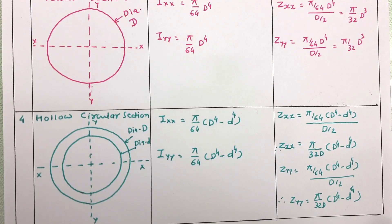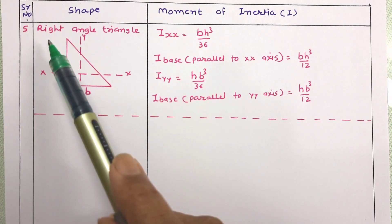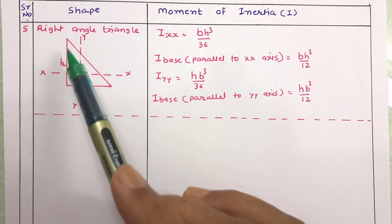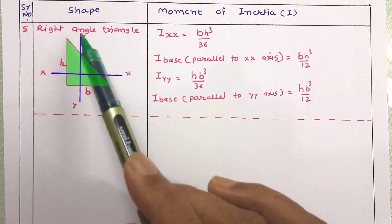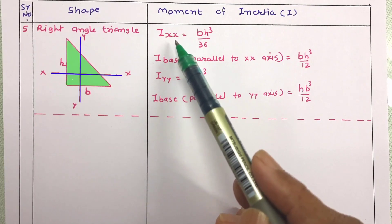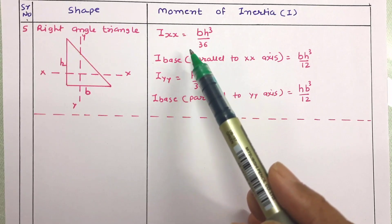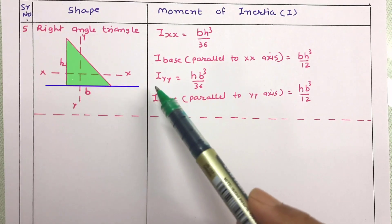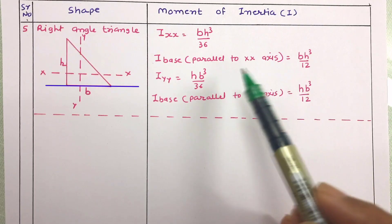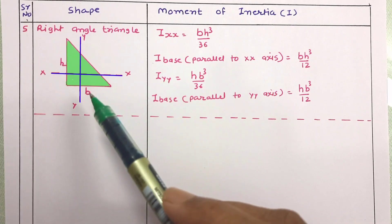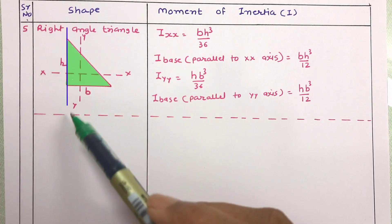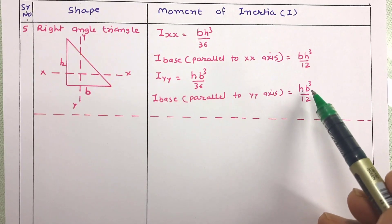For the triangular section, consider first the right-angle triangle with base b and altitude h, with centroidal axes xx and yy. The moment of inertia about the xx axis is I_xx = bh³/36. The moment of inertia about the base is I_base = bh³/12. The moment of inertia about the yy axis is I_yy = hb³/36, and about the base parallel to yy is hb³/12.